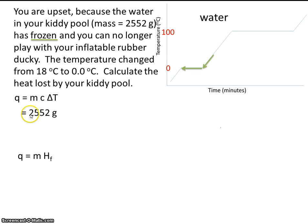The mass of the water, that's given to us in the problem. C, that's the specific heat capacity for water when it's a liquid, and that's given to us in our chart.